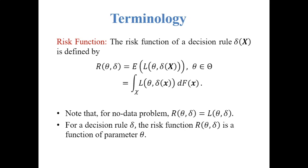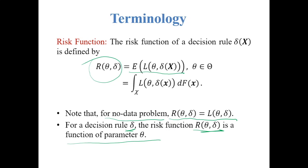The risk function of a decision rule delta is defined as the expected value of the loss function. Since the decision rule is a function of the random variable, the loss function also depends on the random variable and the parameter space. So if we take the expectation of L(theta, delta(x)), this is called the risk function. When there is no data, the risk function and loss function are the same. For a decision rule delta, the risk function is a pure function of the parameter.